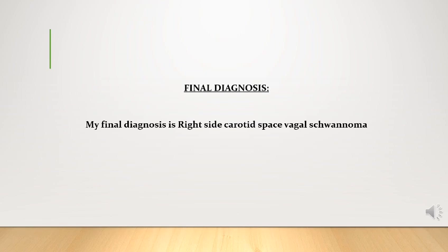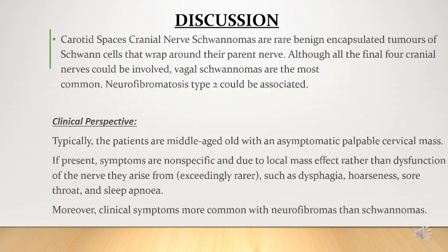Carotid space cranial nerve schwannomas are rare benign encapsulated tumors of the Schwann cells that wrap around their parent nerve. Although all lower four cranial nerves could be involved, vagal schwannomas are the most common. Typically, patients are middle-aged with an asymptomatic palpable cervical mass. If present, symptoms are nonspecific and due to local mass effect rather than dysfunction of the nerve.